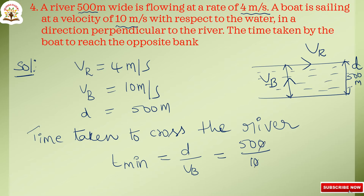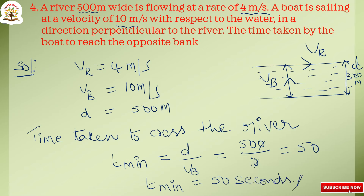The time taken to cross the river: T equals D by Vb equals 500 by 10 equals 50 seconds. This is the final answer.